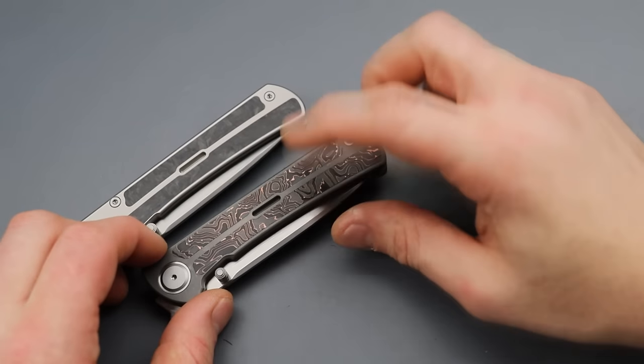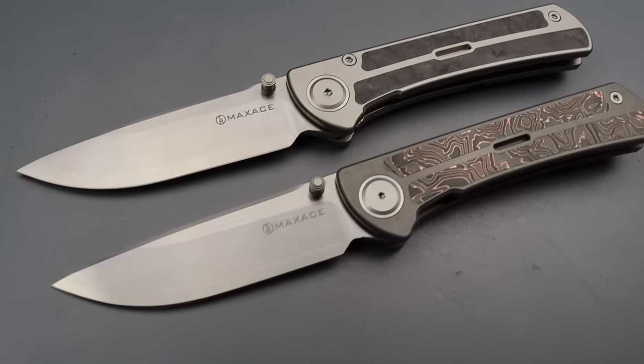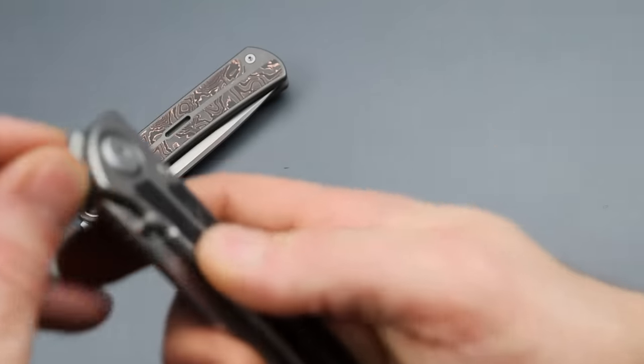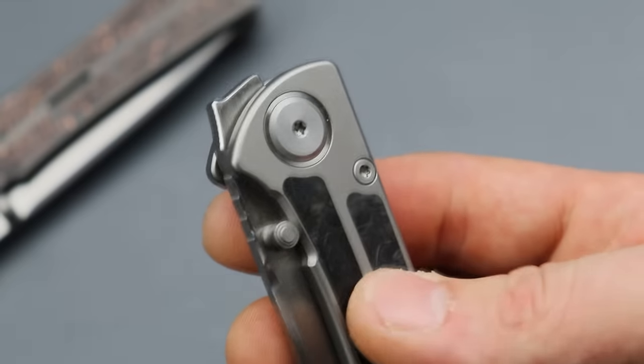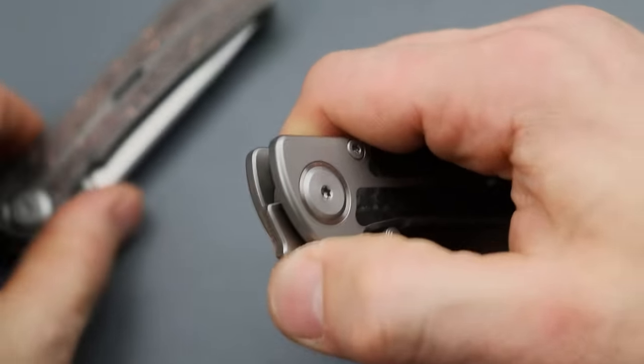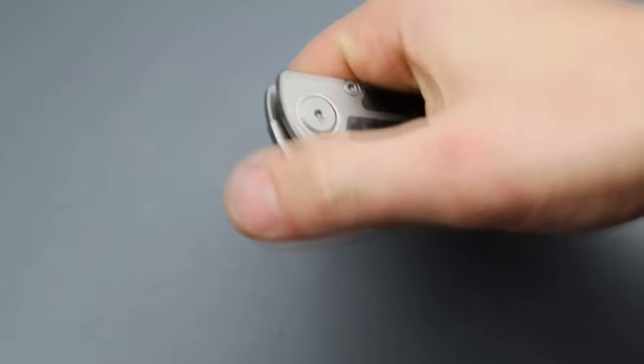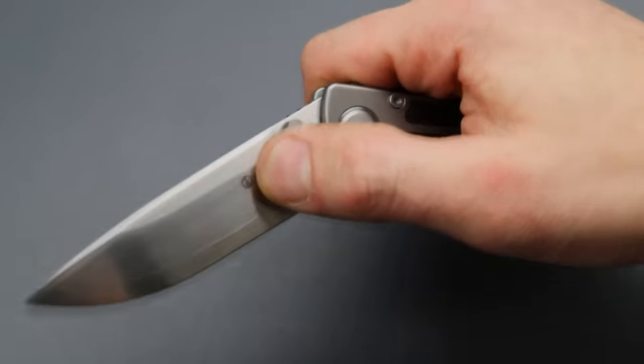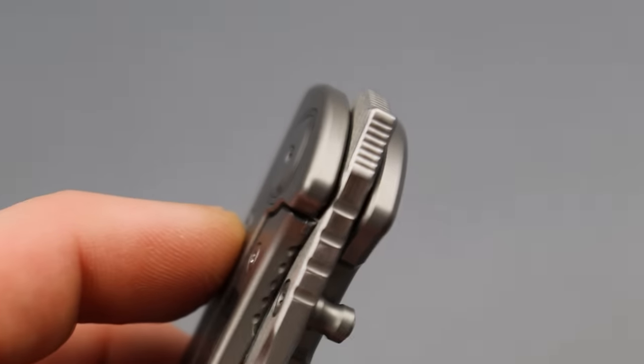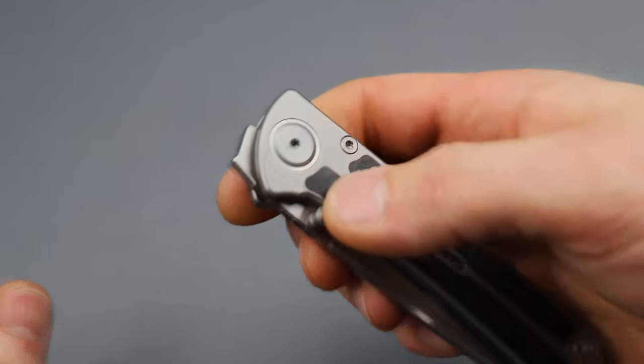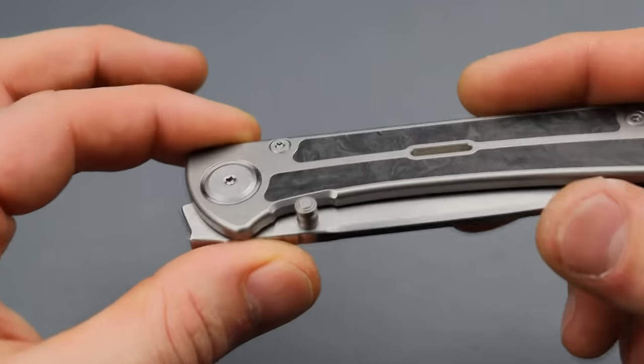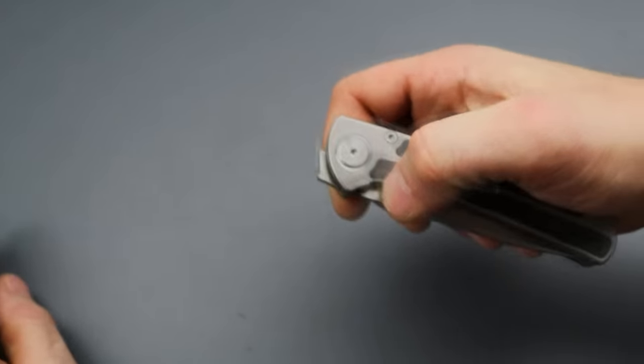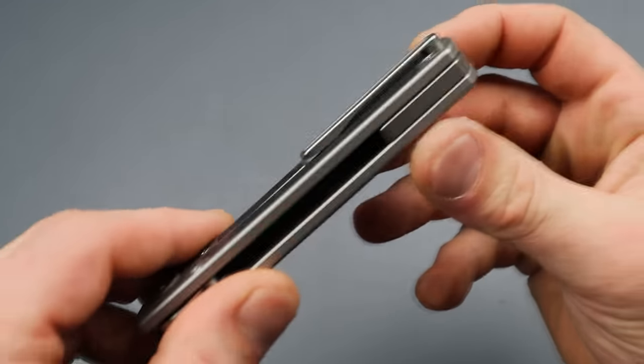Now here is the new Peregrine. Now let's go over the problems that the original Peregrine had and we'll see if they fixed them on this one. So one, the front flipper was just horrendous. There was no jimping, no traction on it so you just slip off. It's hard to deploy, like it just sucks. And it's on washers so it's very tight, it doesn't have that bearing action. I don't even want to try to use it anymore because it's horrible. The thumb studs were pretty decent.